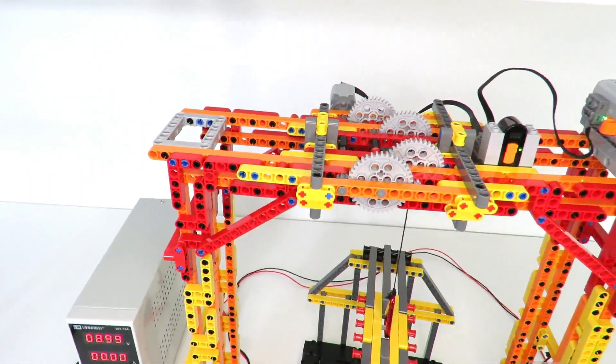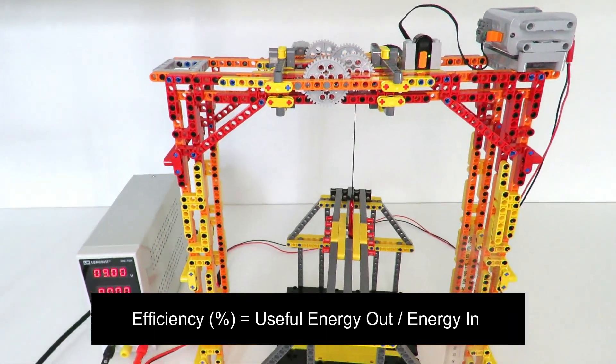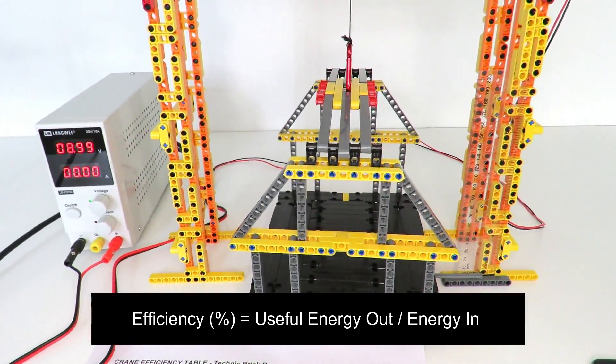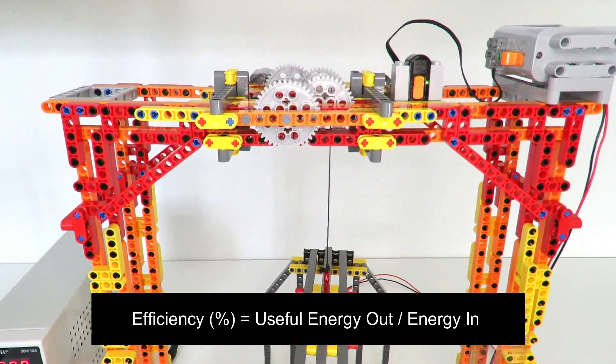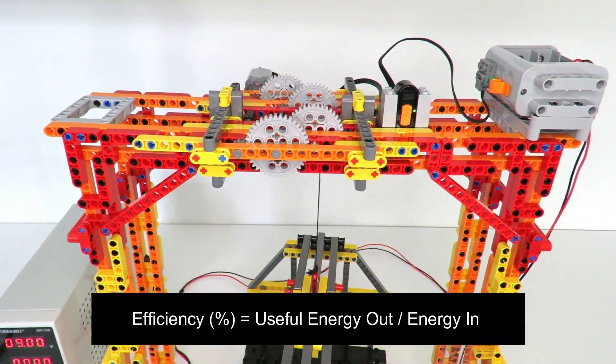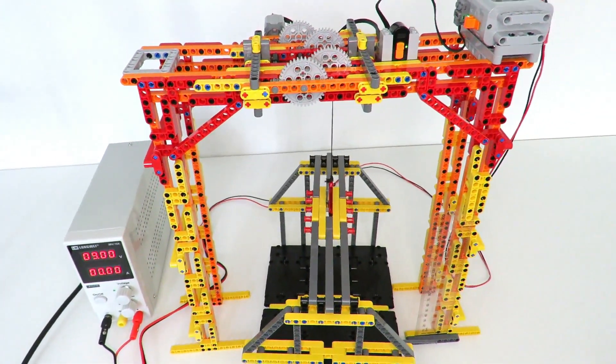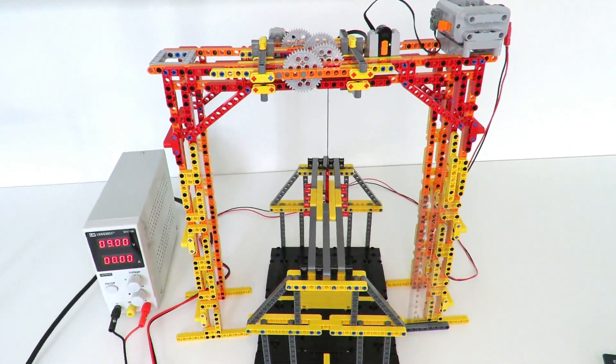In the case of a Lego Technic crane, the efficiency is defined as the amount of work being done by the crane, which is lifting the weight, compared to the amount of power that is actually being put into the crane. The setup I've got here is just one of the cranes that I've been demonstrating for a while in some of my previous videos.